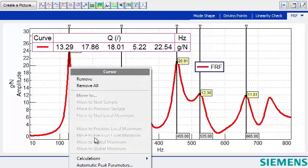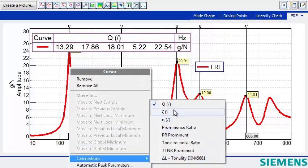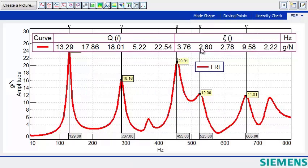If we are also interested, we could get damping in another form, like damping ratio. So now we have Q factor and damping ratio for those 5 highest peaks.